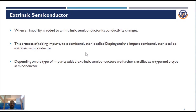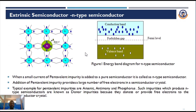When an impurity is added to an intrinsic semiconductor, its conductivity changes. The process of adding impurity to a pure semiconductor is called doping, and the resulting doped semiconductor is called an extrinsic semiconductor. Depending upon the type of impurity added, extrinsic semiconductors are further classified into two types: n-type semiconductors and p-type semiconductors.